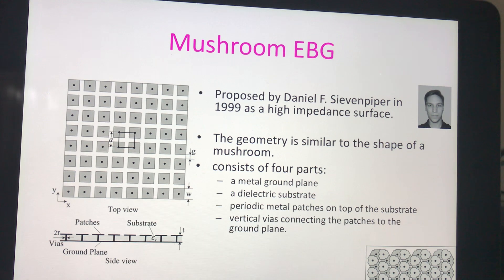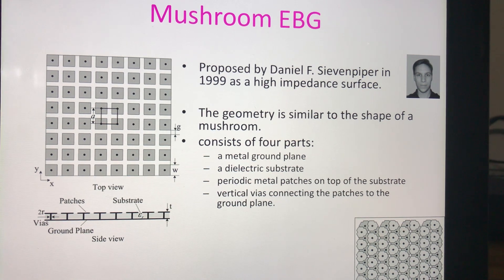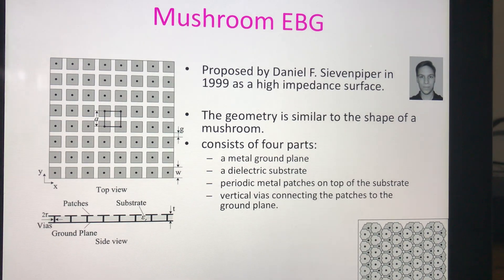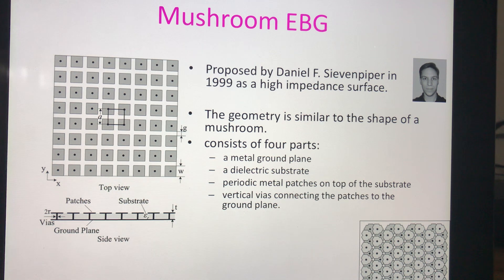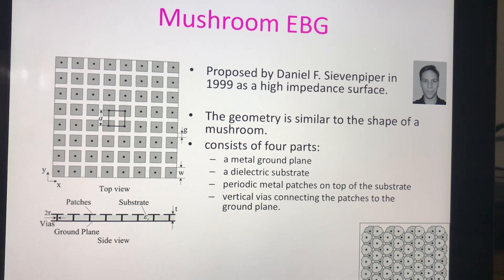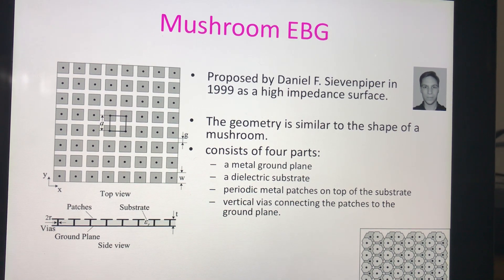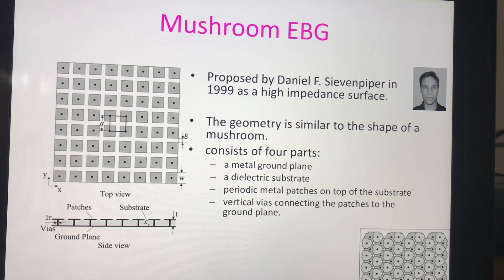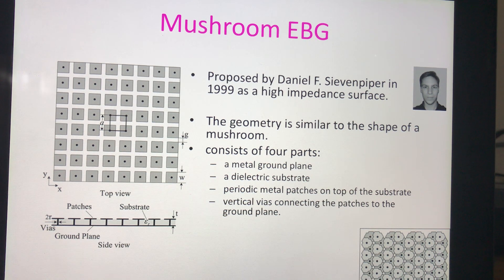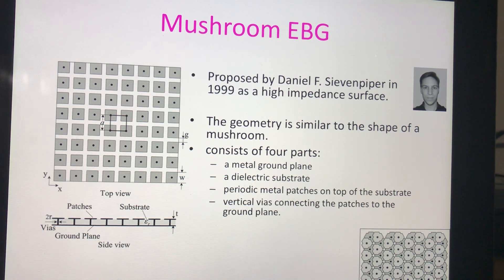The widely used EBG structure is the mushroom EBG structure, first proposed by Daniel F. Sivan Piper in 1999. It was first introduced as a high impedance structure with no possibility for surface waves to propagate through it. Since the geometry resembles a mushroom, it is known as the mushroom EBG. It consists of a metallic ground plane, over which there is a dielectric substrate, and above the substrate, periodic metallic patches are fabricated. Vias connect the top metallic patches to the ground plane.